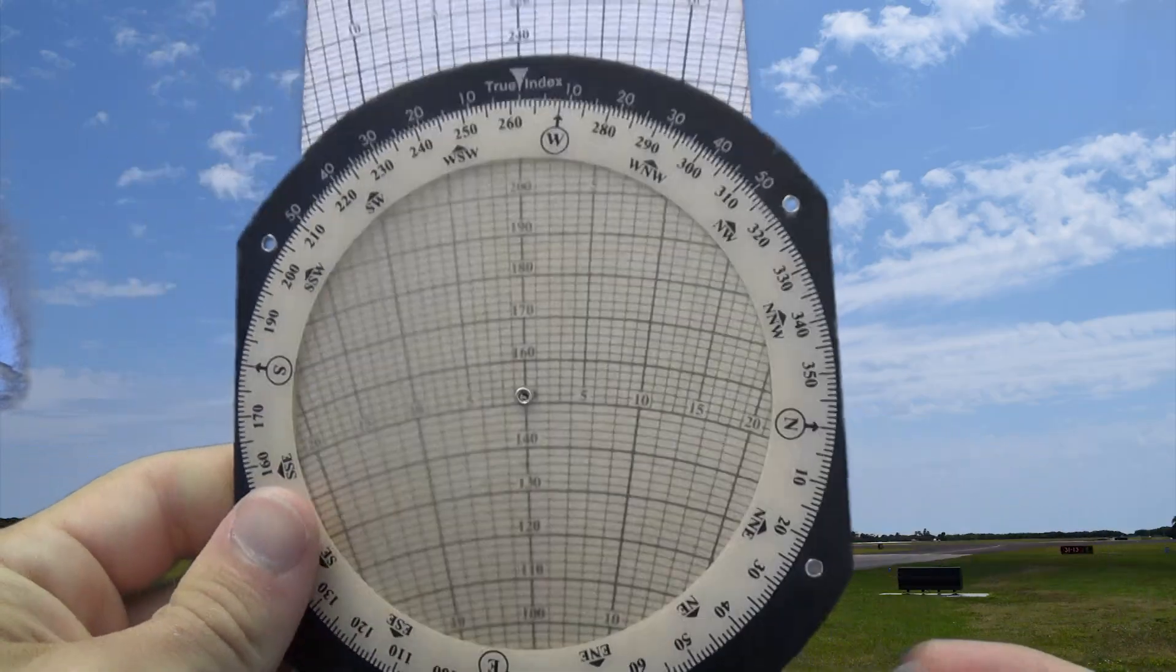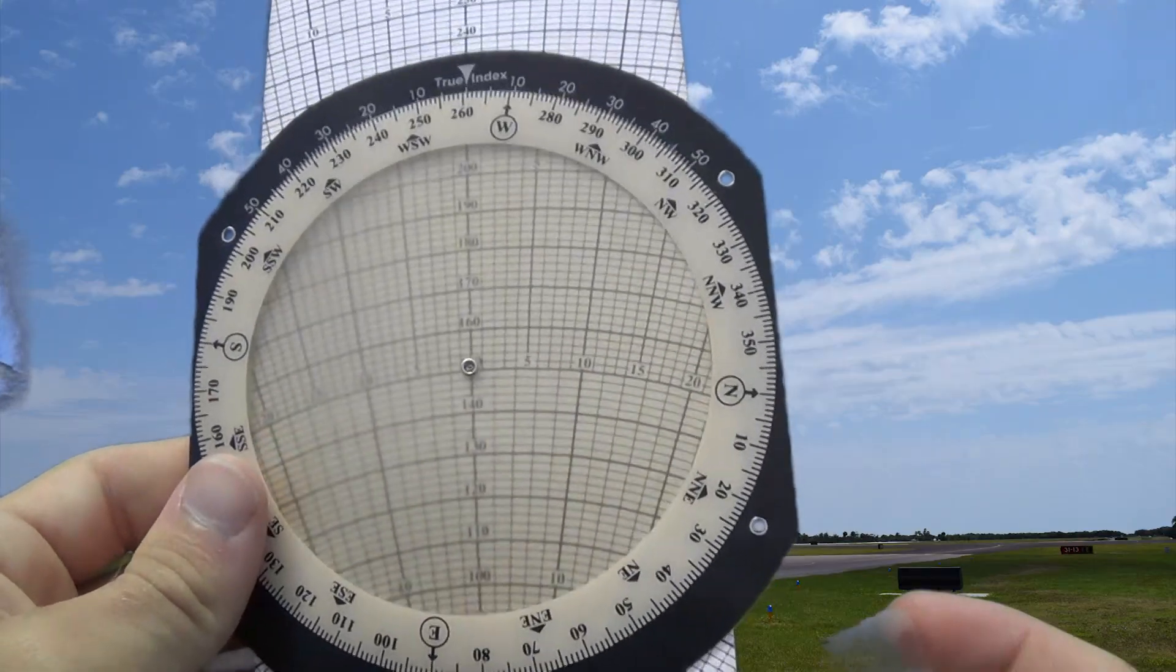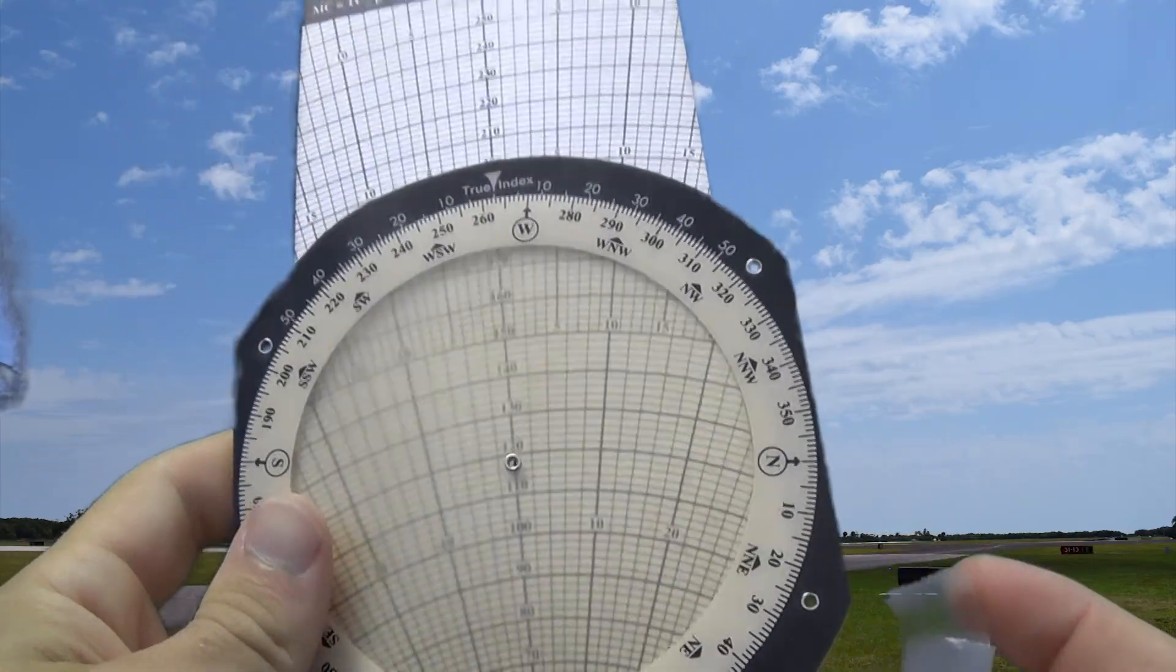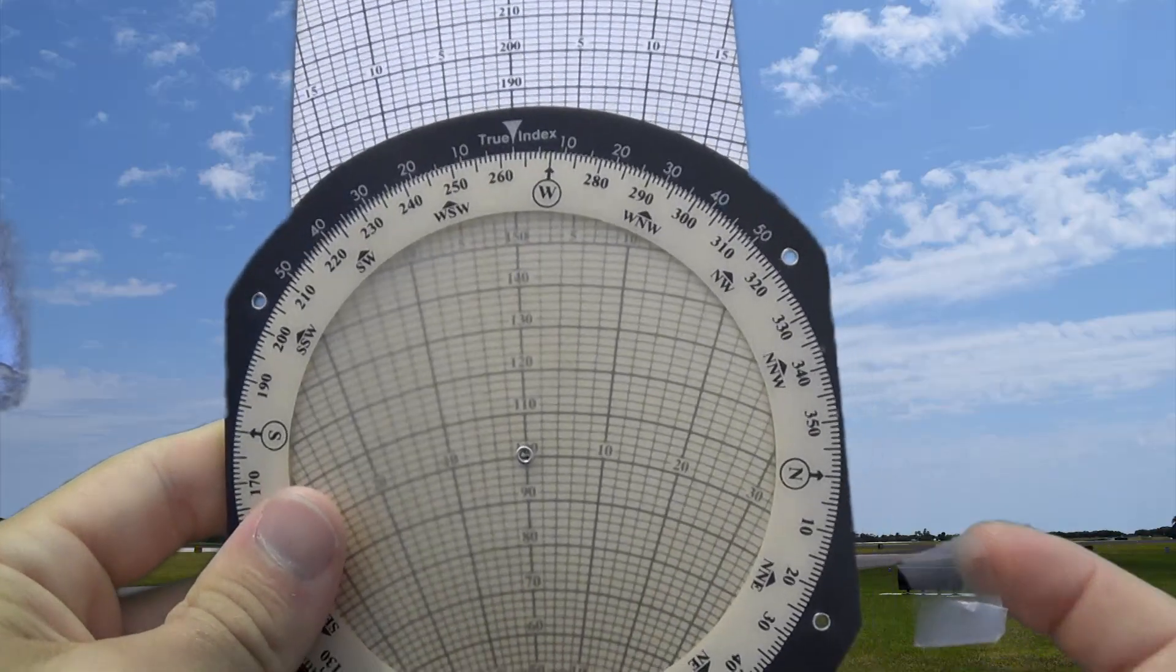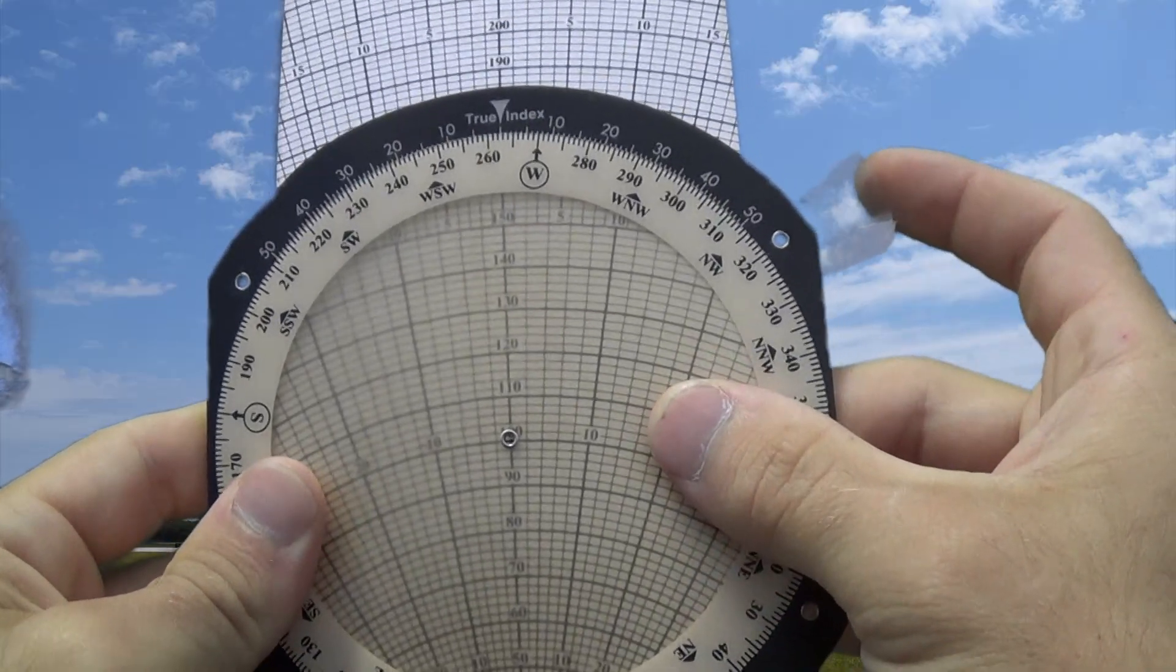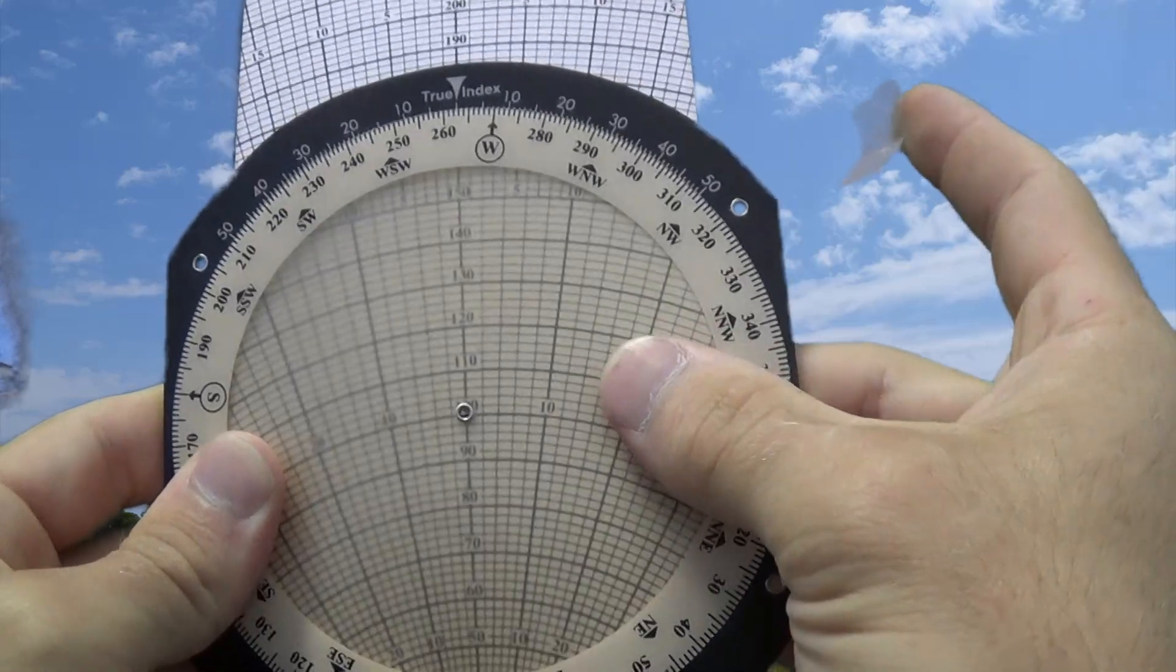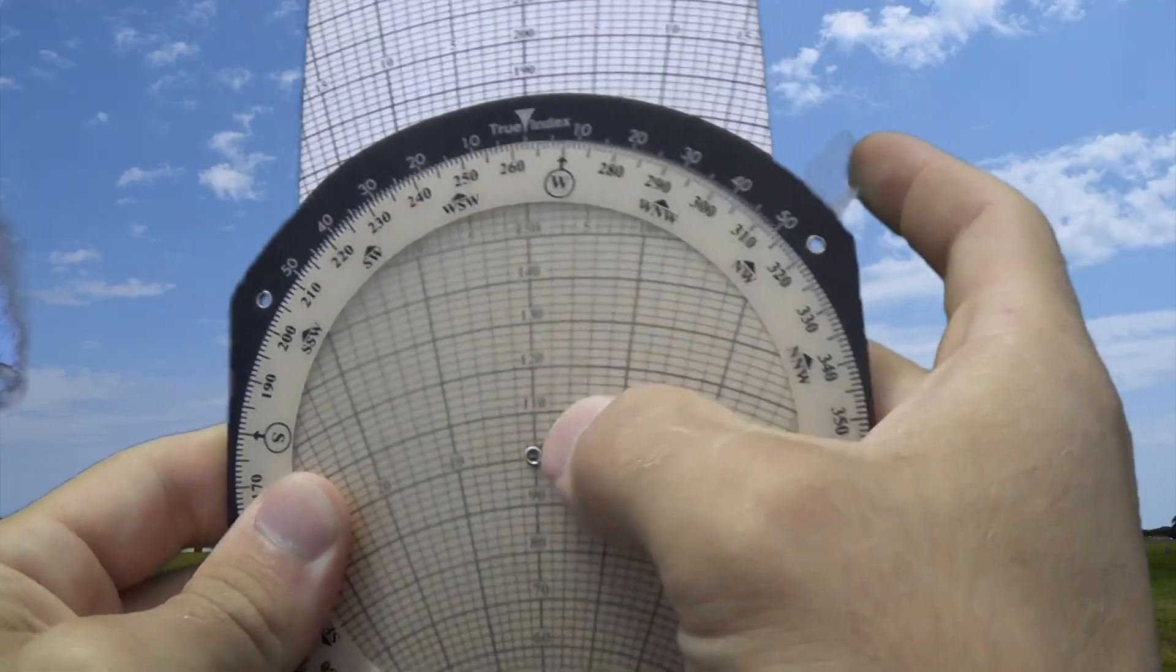So we have our E6B here and what we want to do with that is initially slide our little grommet down to 100. We're going to be right at 100 to start there and we can start at any number but we want to just start at a nice easy round number of 100 and then we can proceed up for our wind.